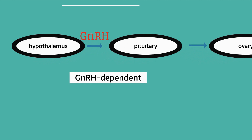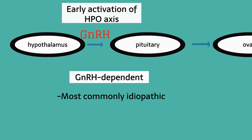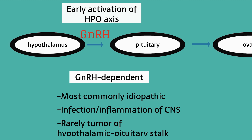GnRH-dependent causes result from early activation of the HPO axis. This is most commonly idiopathic. Other etiologies include infection or inflammation of the central nervous system, and rarely a tumor of the hypothalamic pituitary stalk.